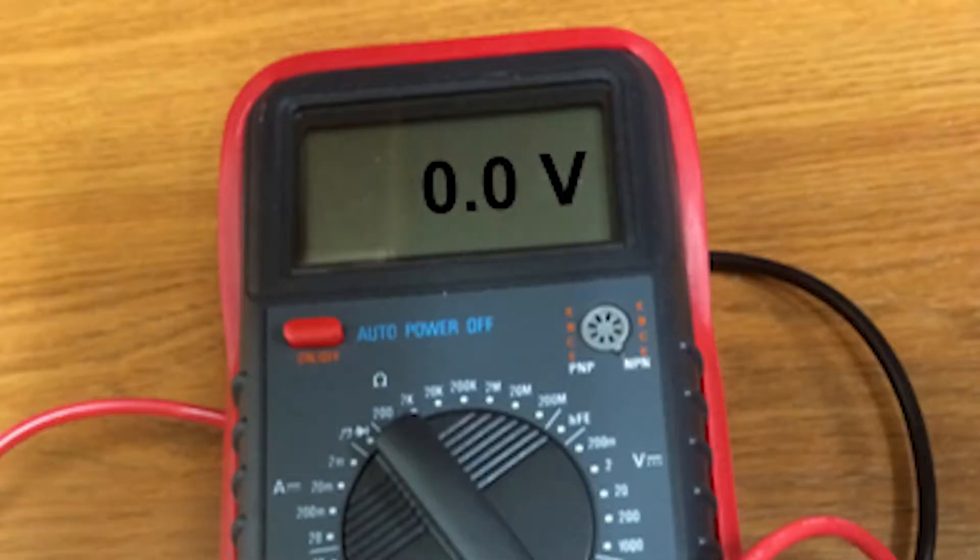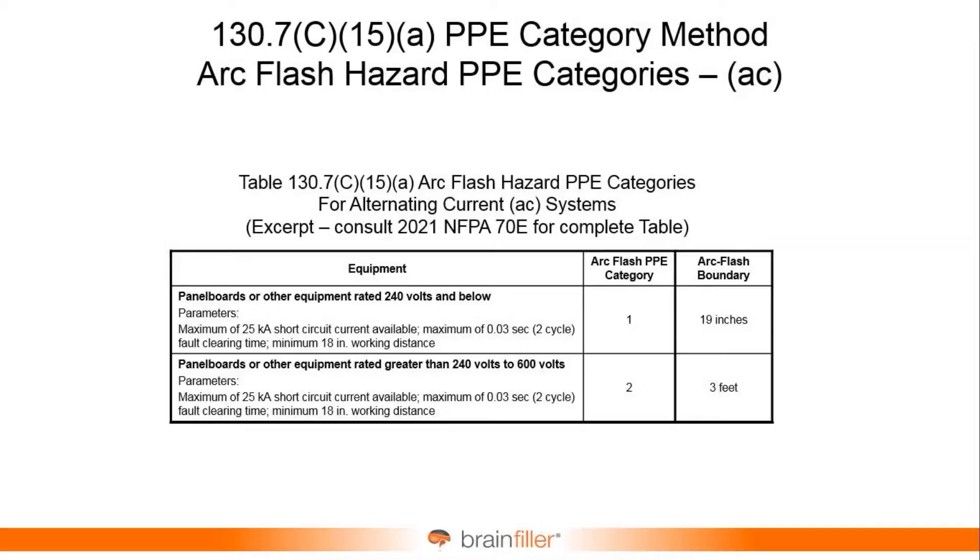When it comes to the hierarchy of risk control, number one is eliminate the hazard. From there, we'll talk about establishing the electrically safe work condition and all the steps that go along with that. Then I'll show you how to perform the shock risk assessment and the arc flash risk assessment — broken into two directions: an incident energy analysis, a calculated value in calories per square centimeter, and the NFPA 70E PPE category method, with a detailed example.